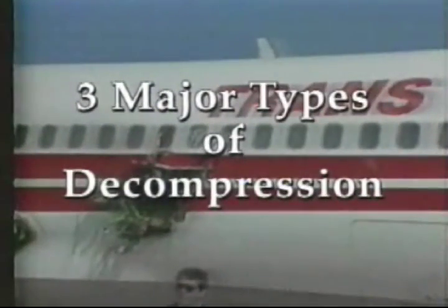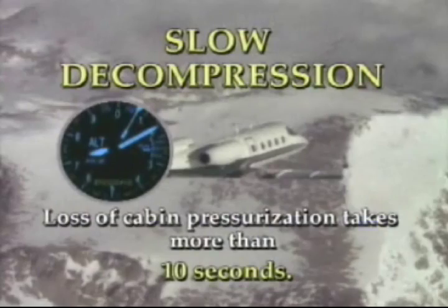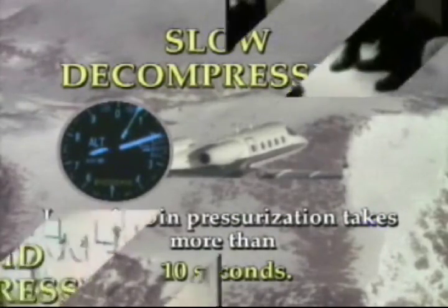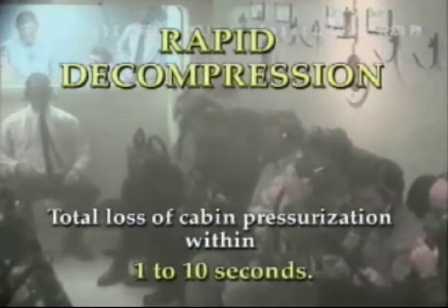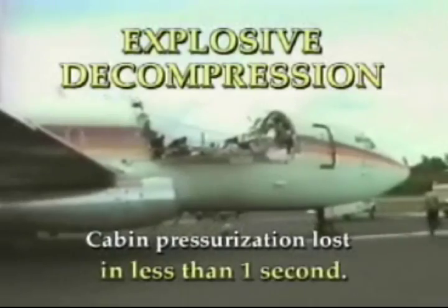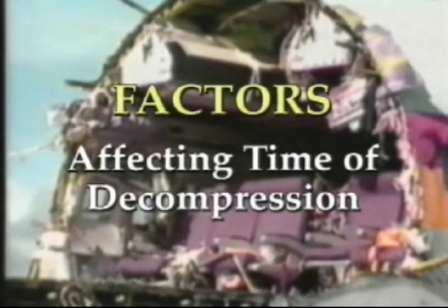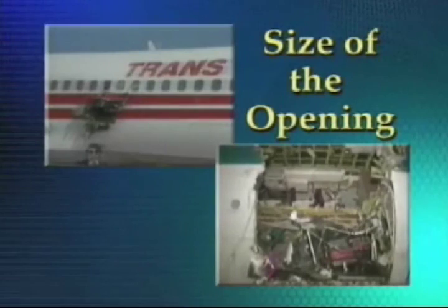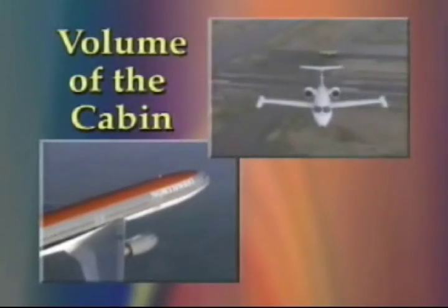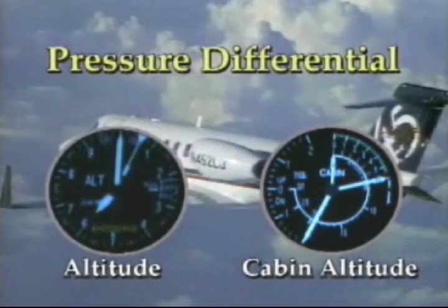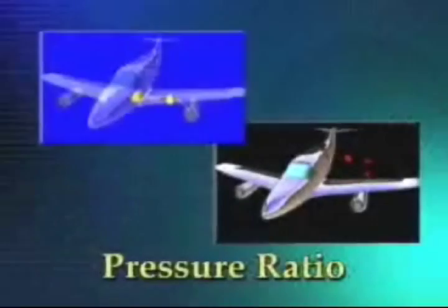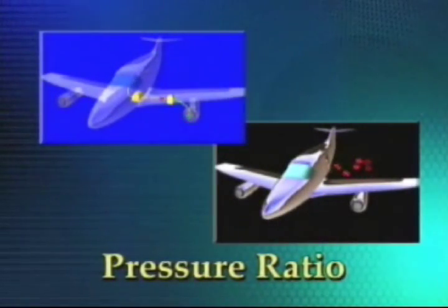The three types of decompression are: slow decompression — cabin pressurization is lost in 10 seconds or more; rapid decompression — loss of cabin pressurization occurs within 1 to 10 seconds; explosive decompression — cabin pressurization is lost in less than 1 second. Factors that affect the time of a decompression include: size of the opening, volume of the cabin, pressure differential, pressure ratio, and altitude.